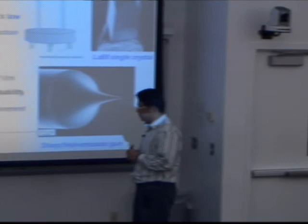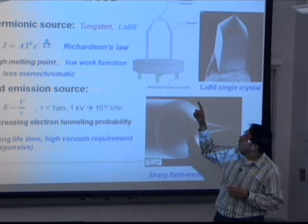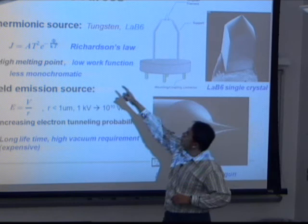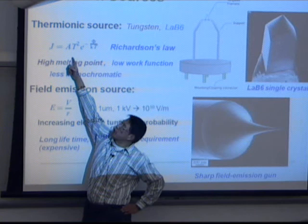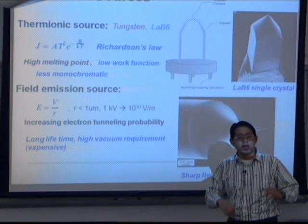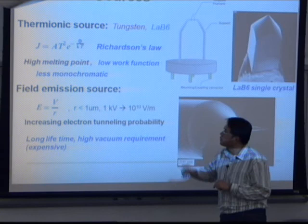Now let's talk about the electron source, which is very important — it's the beginning of getting the image. There are two types of thermionic sources: tungsten and lanthanum hexaboride (LaB₆). There are also field emission sources. The thermionic sources are governed by the Richardson law, where the current density is proportional to the square of the temperature and an exponential depending on the work function φ. A higher melting point material like tungsten allows higher temperatures and more current density. LaB₆ is used because it has a smaller work function.